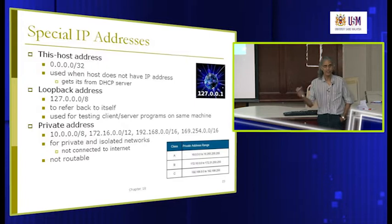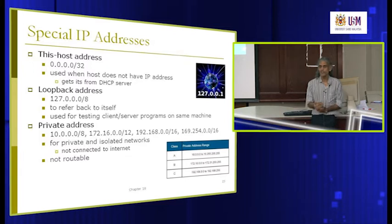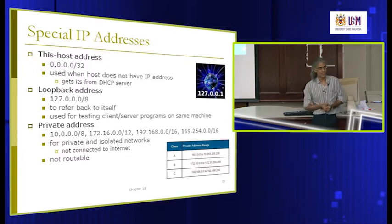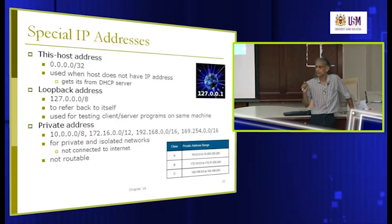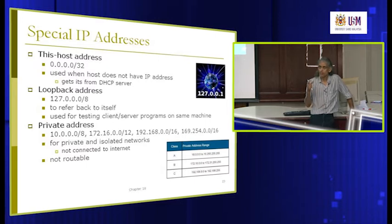Loopback is normally used for testing client-server programs on the same machine. You run both your client and server application on the same machine. When your client wants to call the server, you use this address as the destination. For example, in a web browser you can type http://127.0.0.1 and it will go to the same machine — if there is a web server running, it will show the web page.